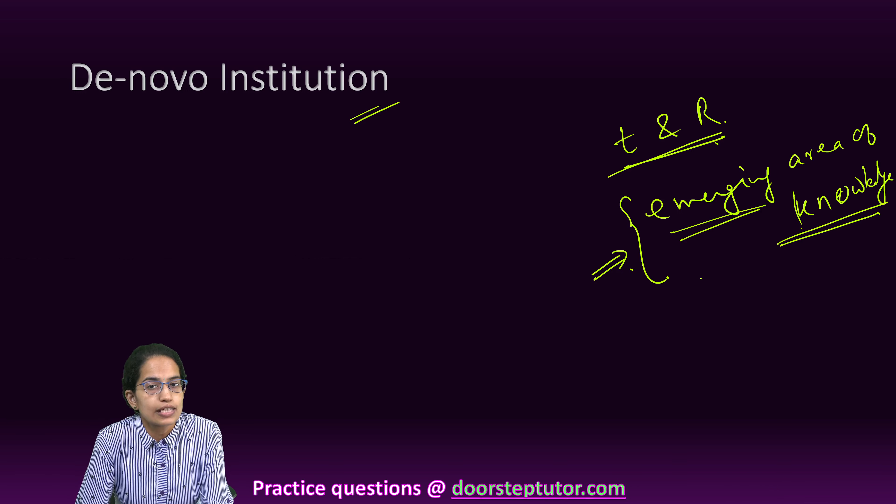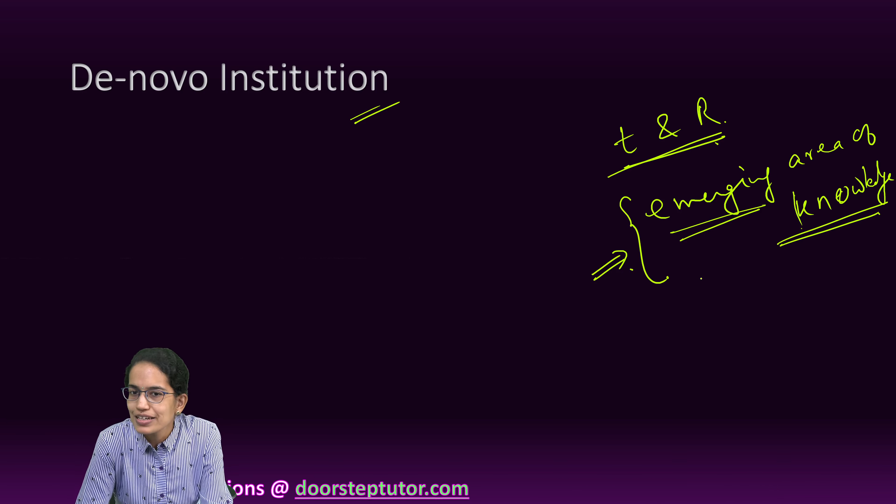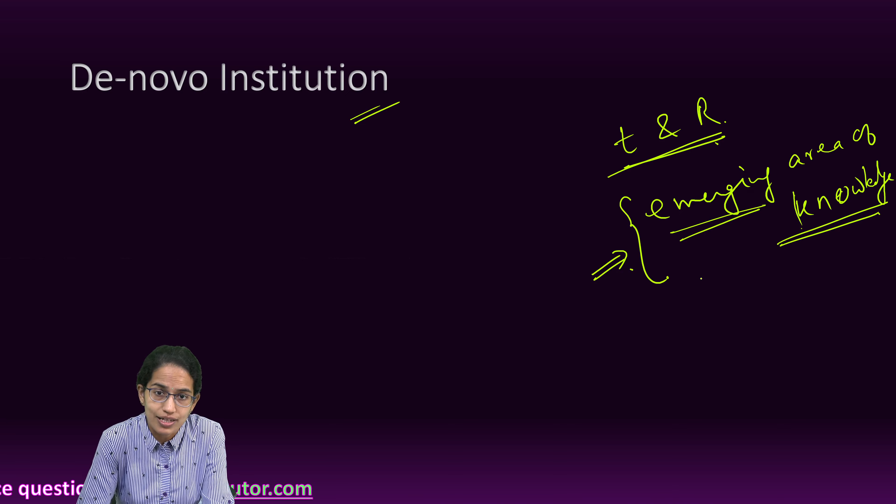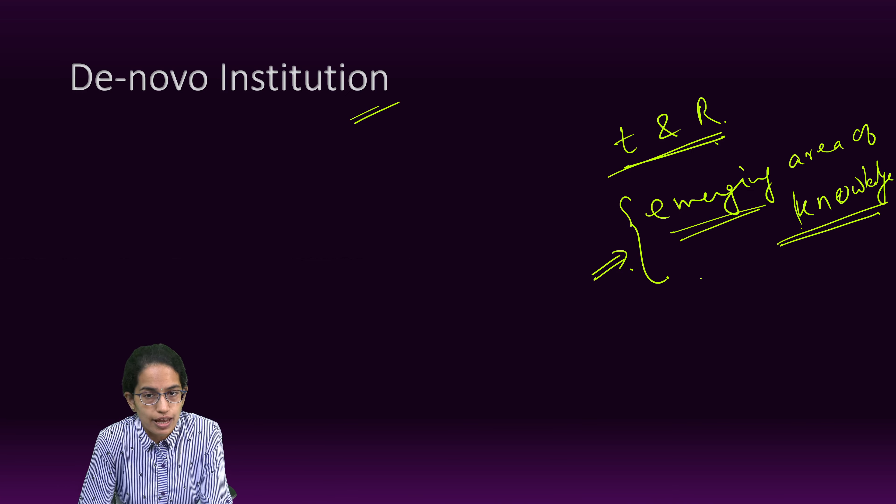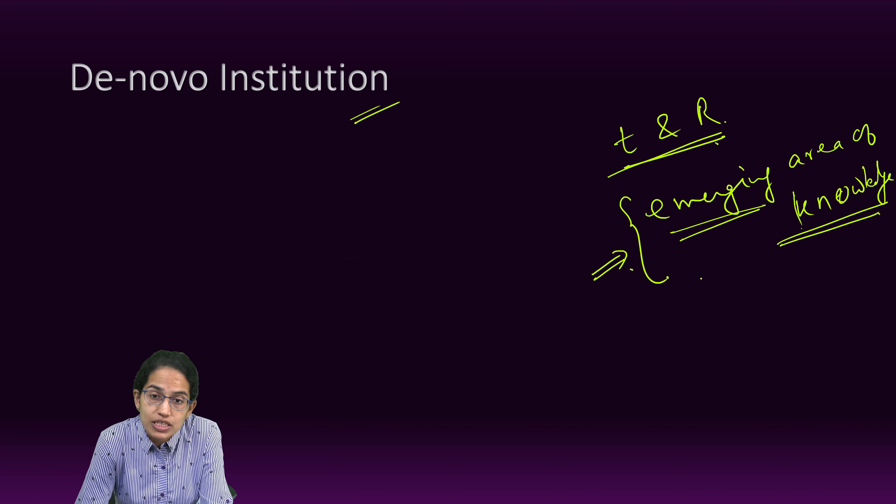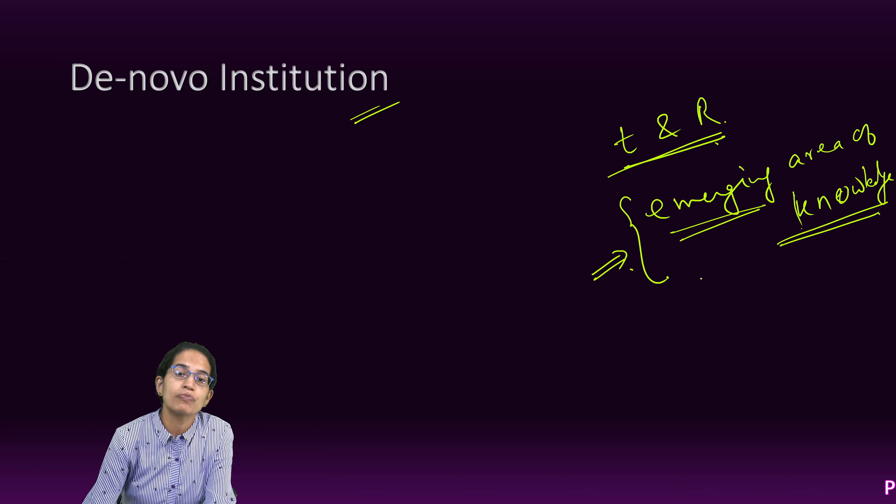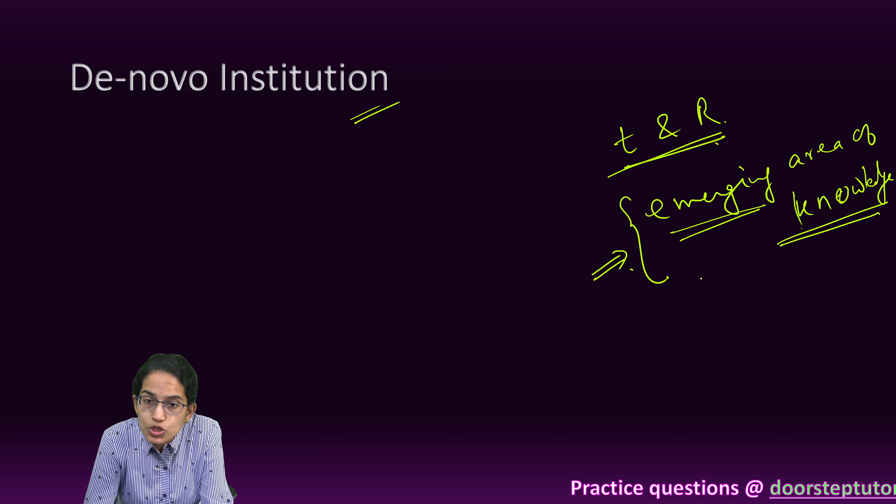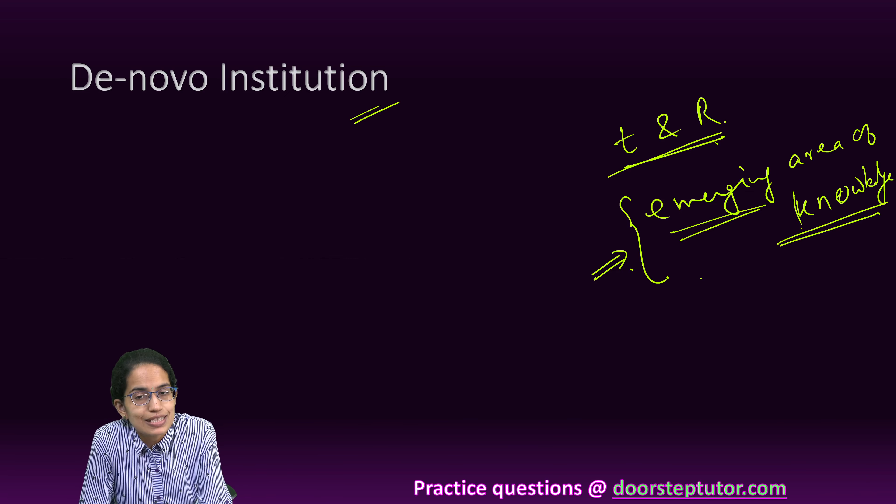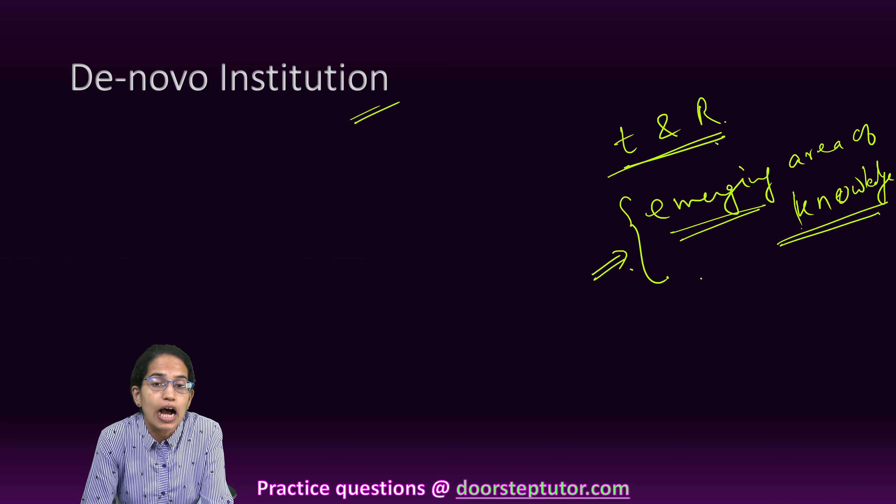So, that is about some of the important terms that we commonly hear in higher education. These terms can be directly part of your question. There can be questions based on definition. What do you mean by twinning program? What is a constituent institution? What is a foreign educational institution? The basic definitions and the guidelines for these are highly important.